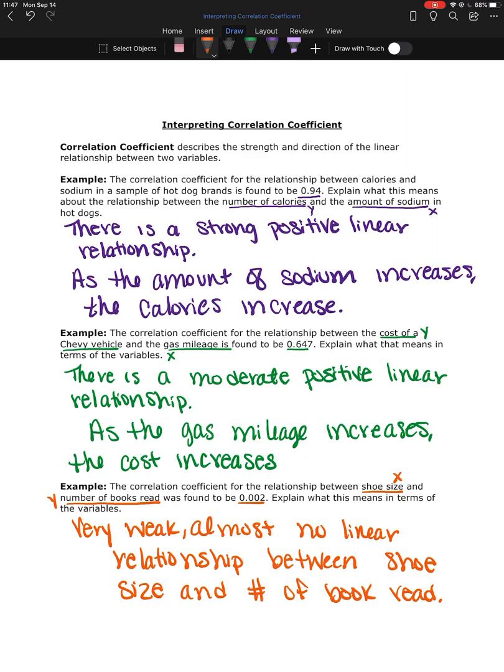Okay, so here are some examples of how we want to be interpreting the correlation coefficient, especially when we're being asked to interpret it in terms of the variables. So part of the interpretation is looking at, is it strong, moderate, weak? Is it positive or negative? But then we also want to state what's happening to the response variable as the explanatory variable increases.